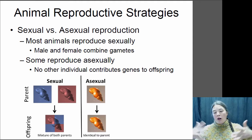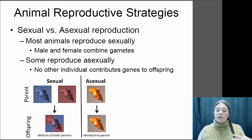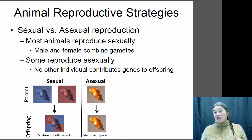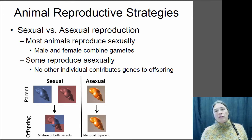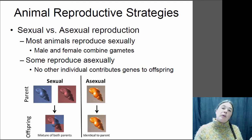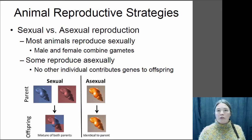In sexual reproduction there's a male, there's a female, there's a combination of gametes and you get offspring that are genetically diverse from their parents. But some species can reproduce asexually where it's just the one individual and they produce offspring that are identical to themselves. And some animals can actually switch back and forth between these two strategies depending on the environmental conditions. If the environment is very stable, oftentimes it's beneficial to reproduce asexually because if you're a good fit for that environment and you produce clones of yourself, your offspring will likely be a good fit for that environment as well and you don't have to spend all the energy finding a mate.